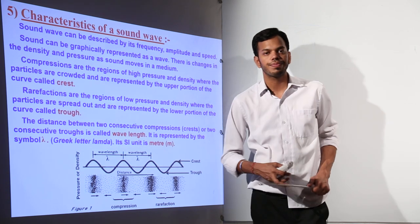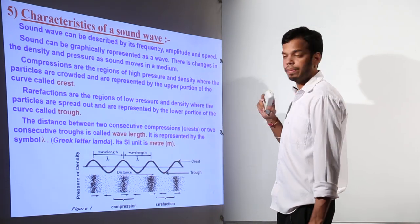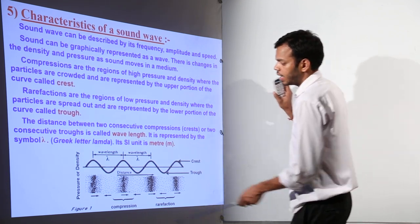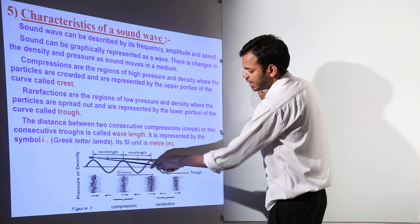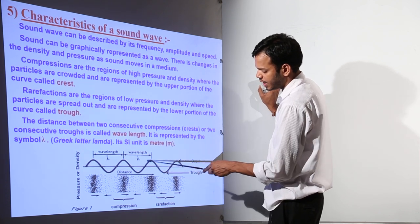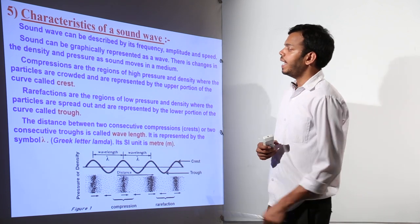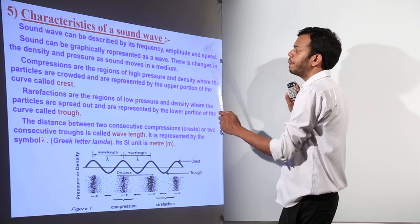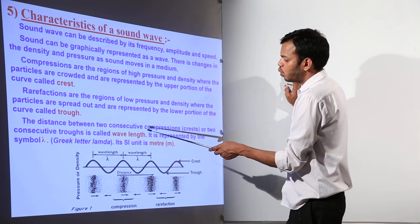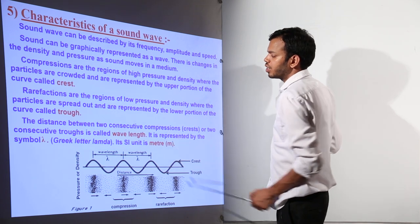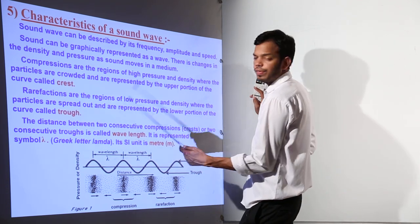First, you should know about wavelength. In a transverse wave, the upper parts are called crests and the lower parts are called troughs. One crest and one trough together make one complete wavelength. Similarly, one compression plus one rarefaction is one wavelength in a longitudinal wave. The distance between two consecutive compressions or two consecutive rarefactions is called wavelength. Likewise, the distance between two consecutive troughs or two consecutive crests is a wavelength.